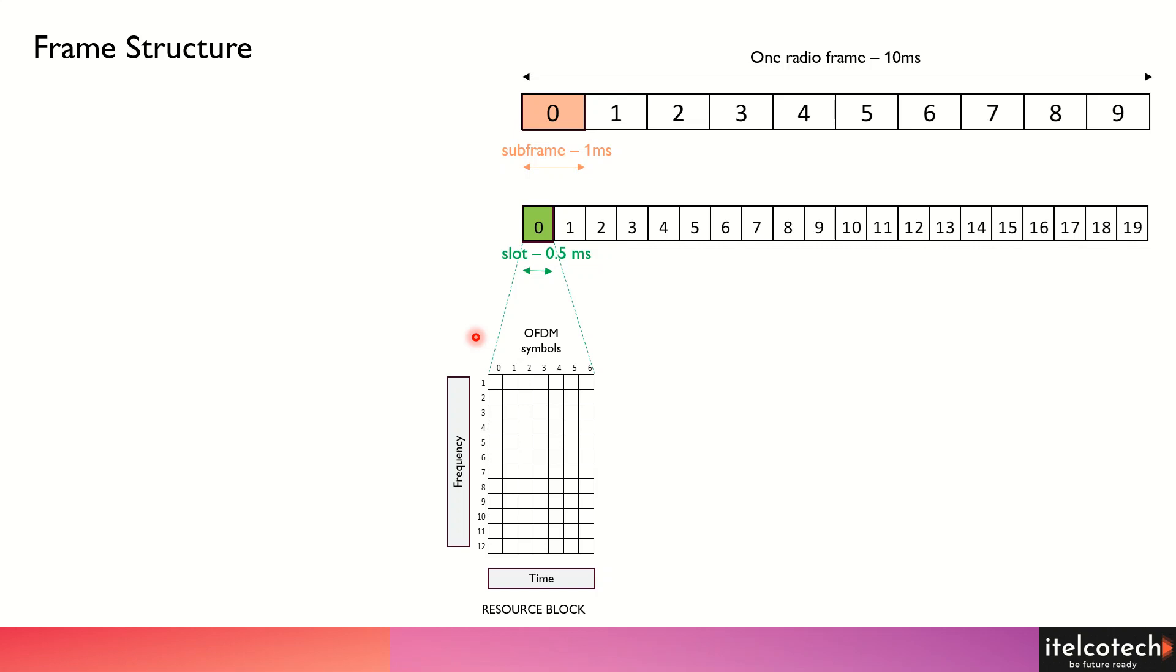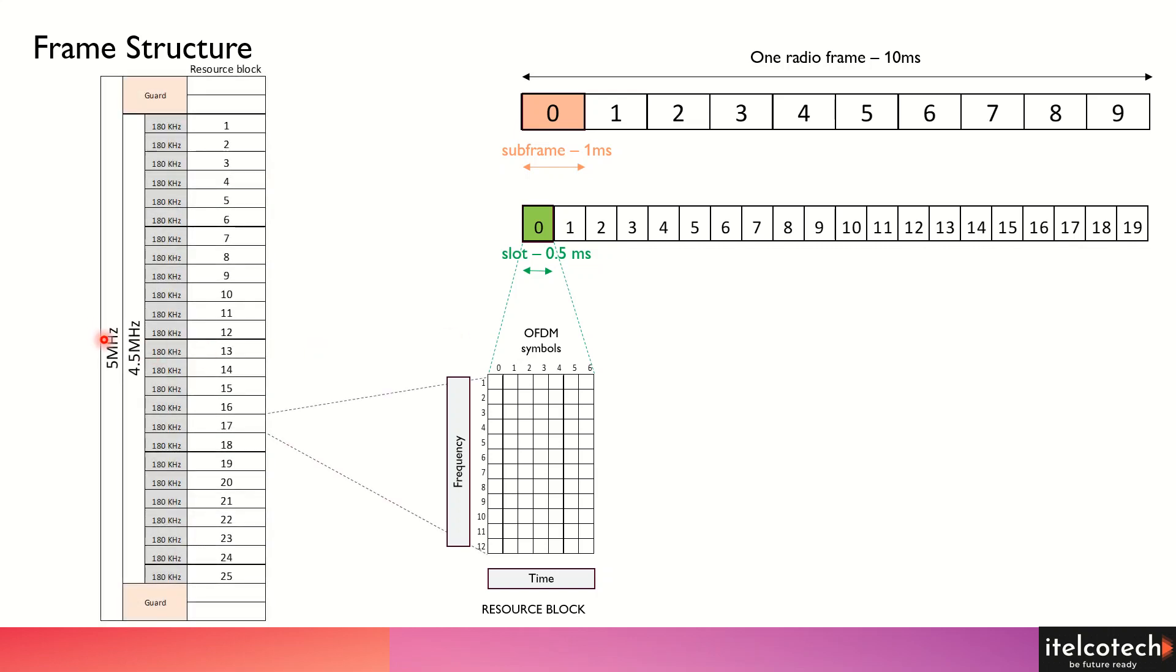In 4G, we have around 10% as a guard band before and after the whole chunk of frequency, and within that, we have different resource blocks. For every resource block - in this case considering 5 megahertz - 180 kilohertz is one resource block in the frequency domain.